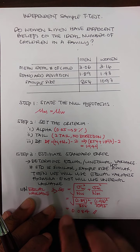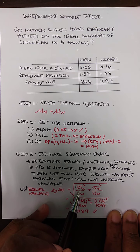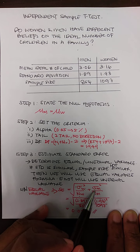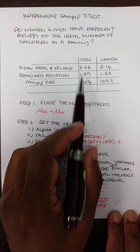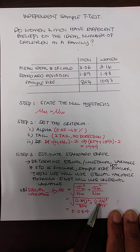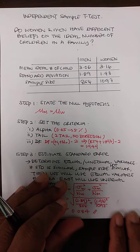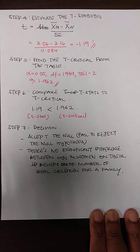For the unequal variance formula, I take the standard deviation, square it to get the variance, then divide each group's variance by its sample size and add them together: (1.93² / 1097) + (1.89² / 854). Solving this gives a standard error of 0.084.